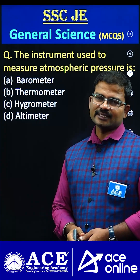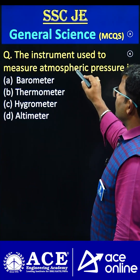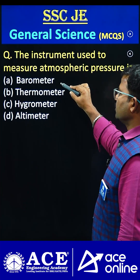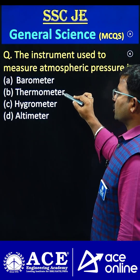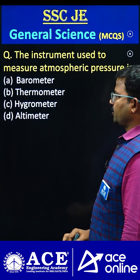Hi students, welcome to ACE online. The instrument used to measure the atmospheric pressure is: barometer, thermometer, hygrometer, or altimeter.